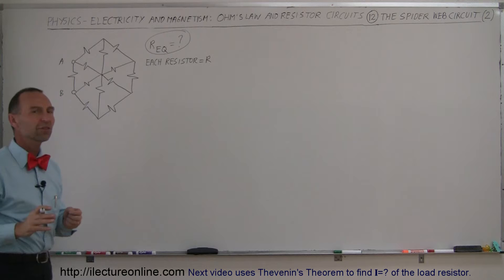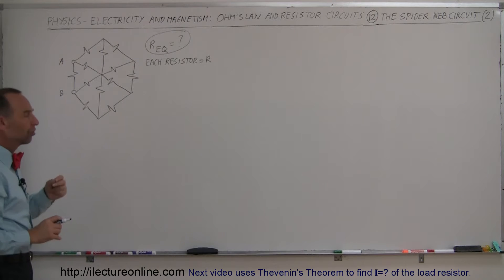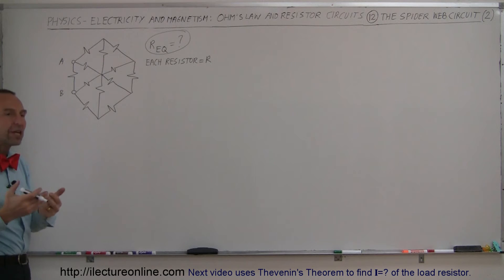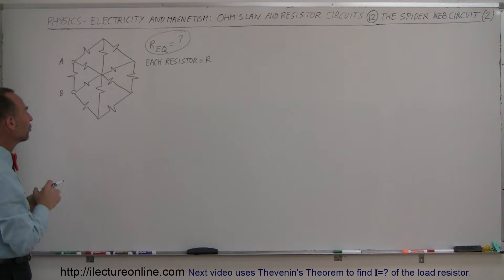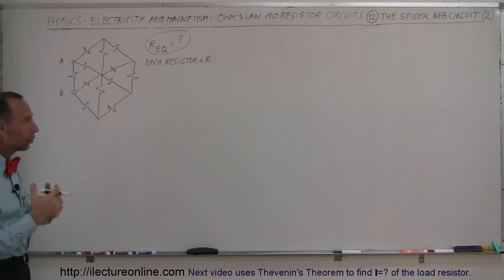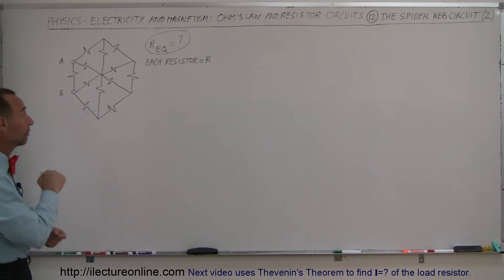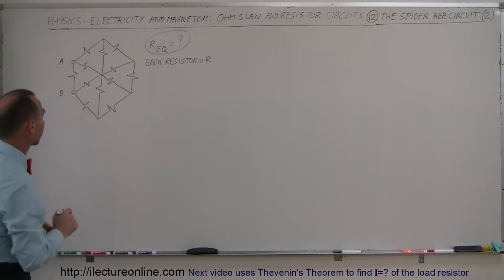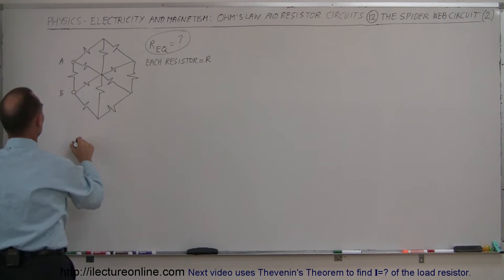Because of the shape and where the terminals are, there's a different approach here than we used previously. What we're going to do is redraw this circuit in a way that we can come up with a good strategy of how to find the equivalent resistance of this circuit.